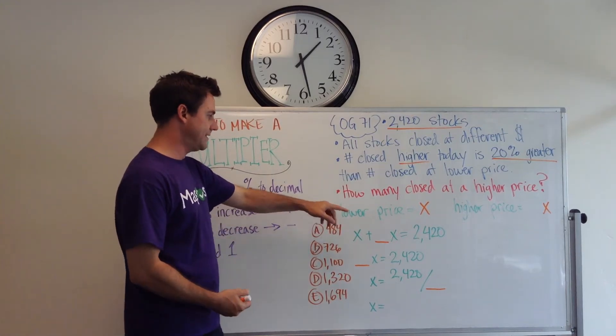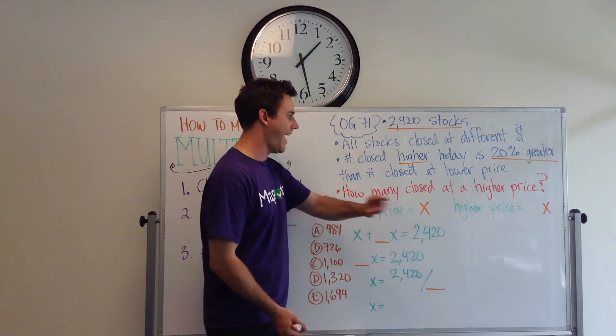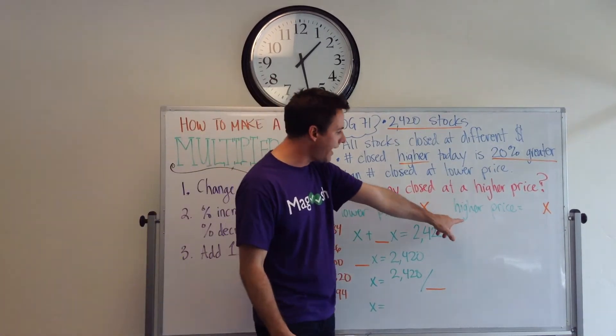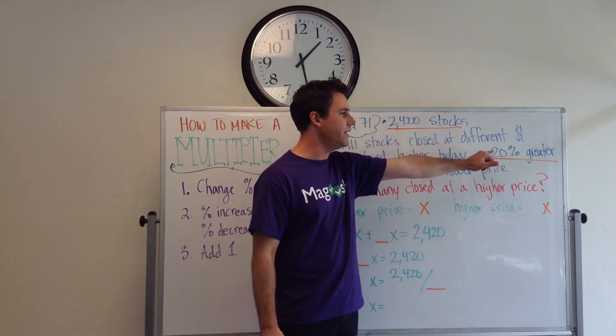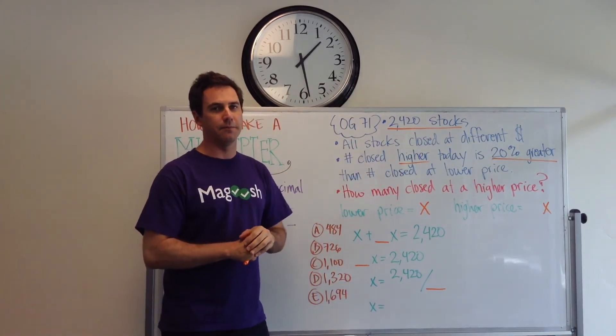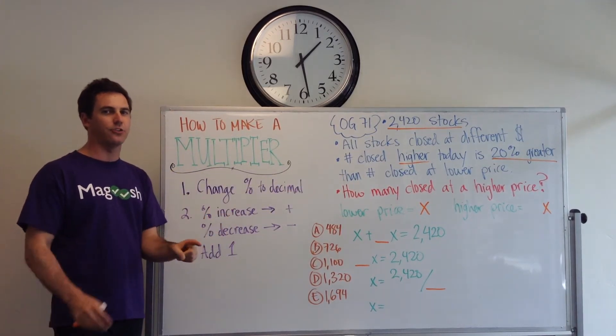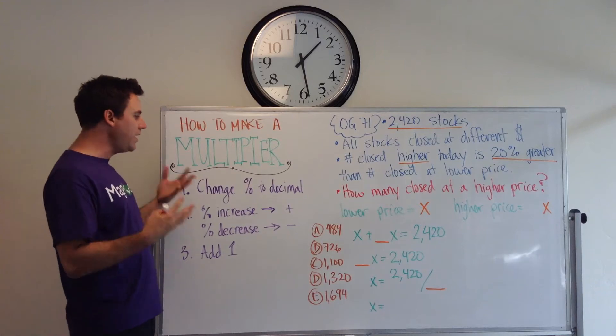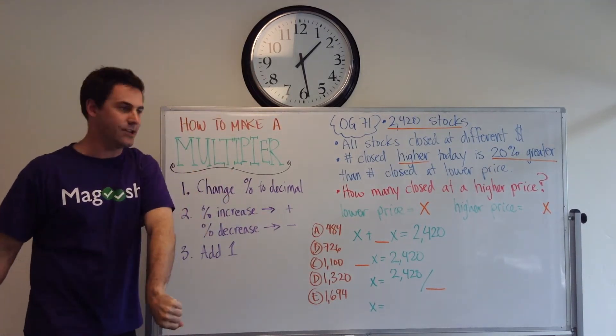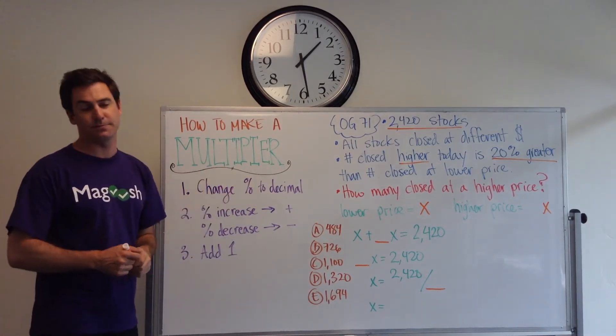The first thing I did was I set the lower price, the stocks that closed at a lower price, to x. And then we're going to use a multiplier for our higher price. Because we have a 20% greater in the problem. And so, this is one big takeaway, is that multipliers are great and useful when you're dealing with percent increase or percent decrease.